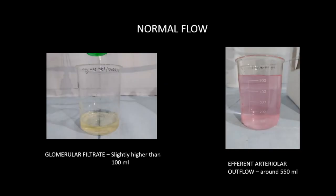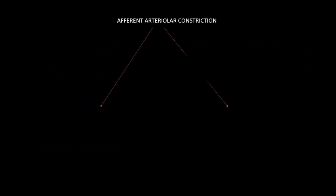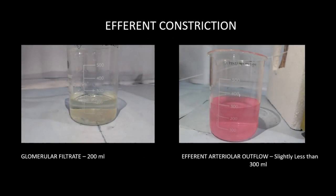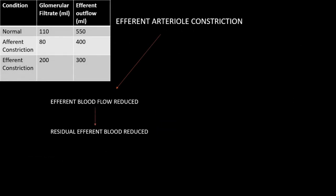Moving on to the observational analysis of the results obtained. The changes in results due to efferent arteriole constriction reduce both the GFR and the efferent arteriole outflow. Efferent arteriole constriction reduces the flow in the efferent arteriole, so we get reduced efferent outflow, but GFR gets increased, which increases the amount of glomerular filtrate collected.